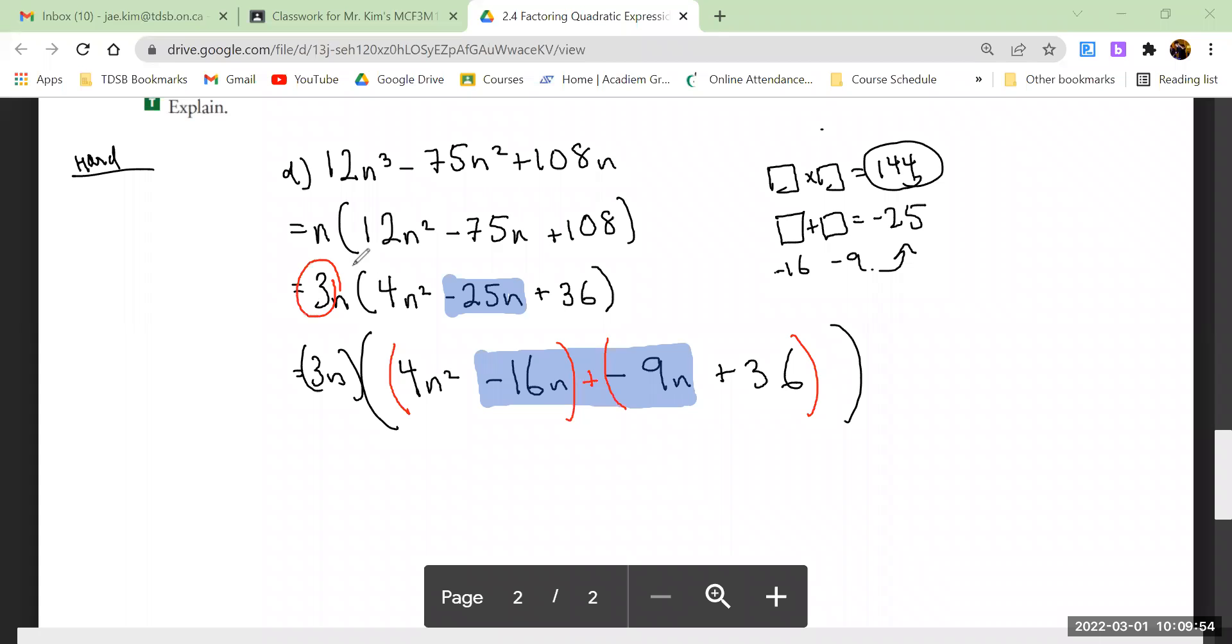I divided a 3 out of everything. I divided an n out of everything. Common factor. Let me just finish this so that you can sort of wrap up at least for today.